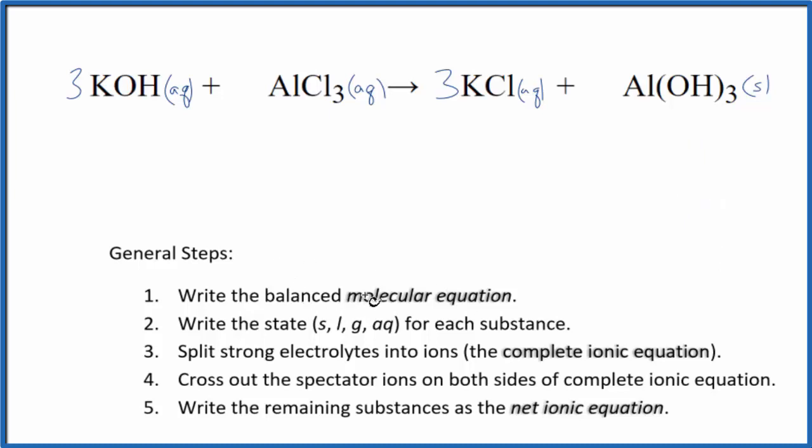So we have the states for our net ionic equation. Now we can split the strong electrolytes into ions. That'll give us the complete ionic equation. Potassium, group one on the periodic table, that's one plus. And this whole hydroxide ion, one minus. So I have three potassium ions. And I won't write the states right now. Let's do that at the end. And three hydroxide ions, that OH minus.